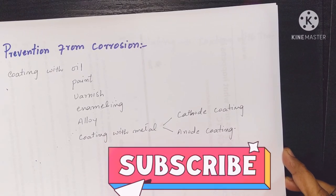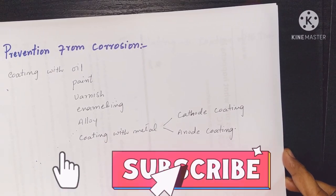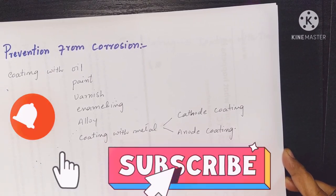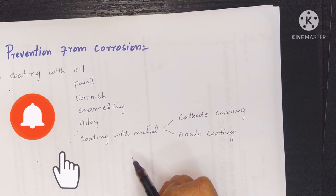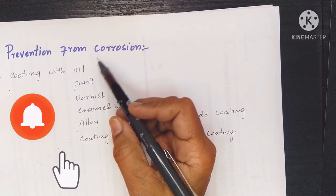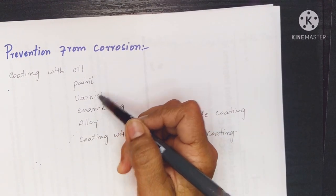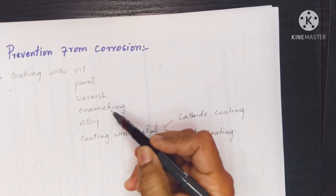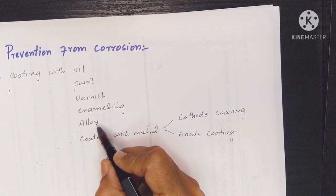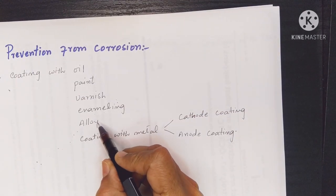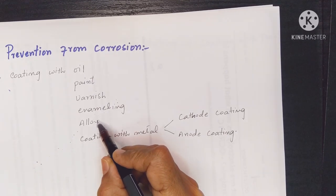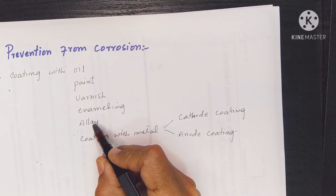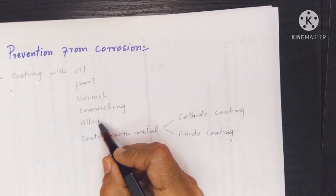We can save metal from corrosion. The most easy and simple method is coating with oil, paint, varnish, enameling, and alloy — we can combine one metal with another metal.